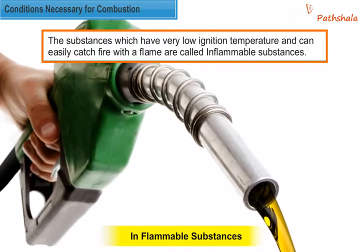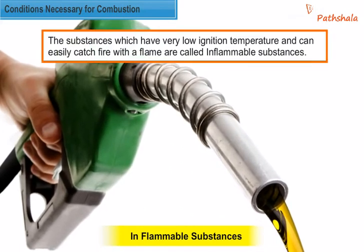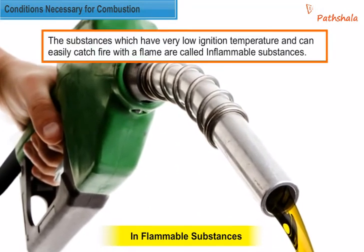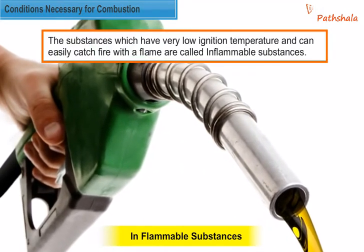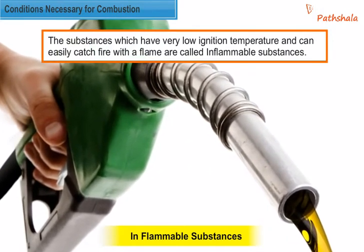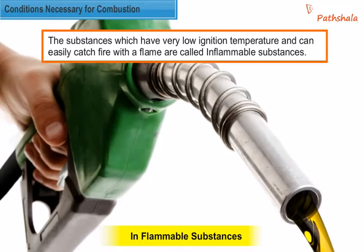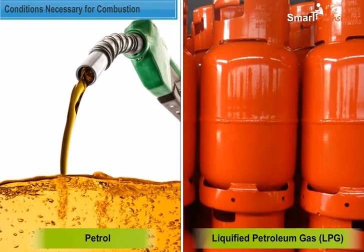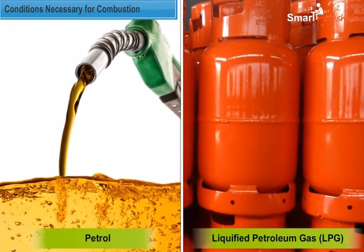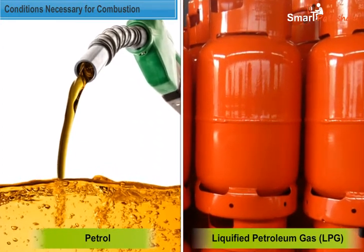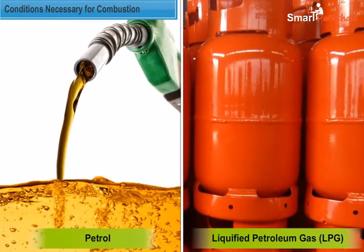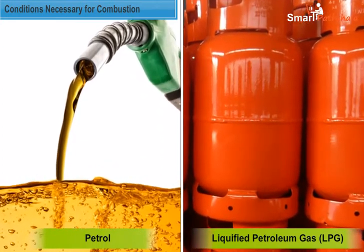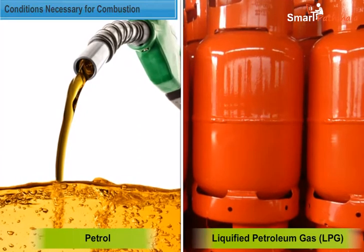Substances which have very low ignition temperature and can easily catch fire with a flame are called inflammable substances. Petrol and liquefied petroleum gas, i.e. LPG, are some examples of inflammable substances.